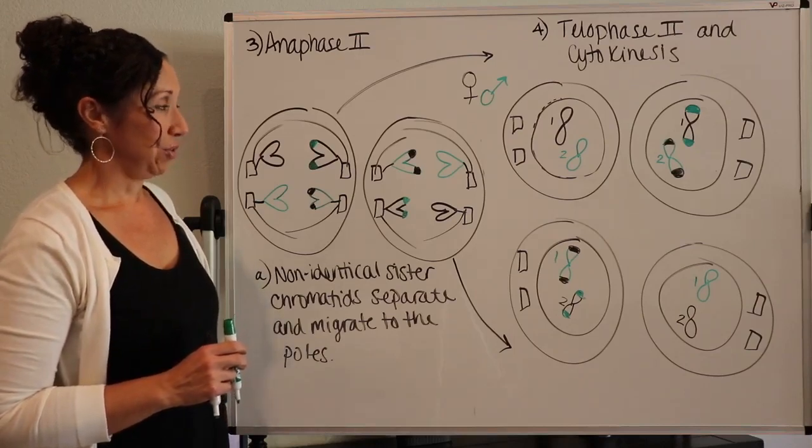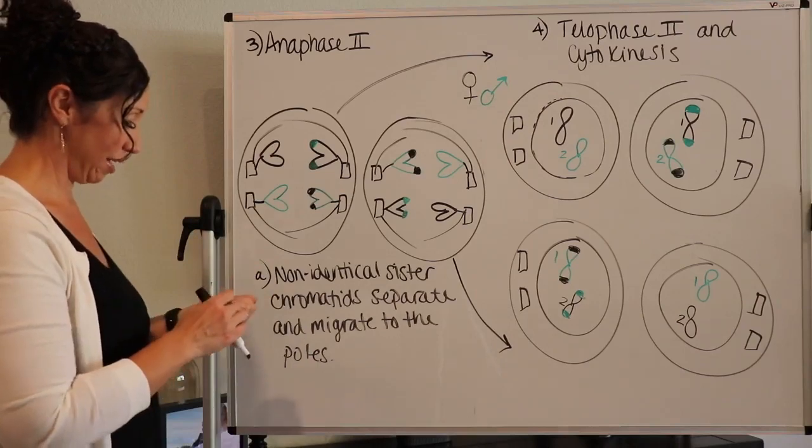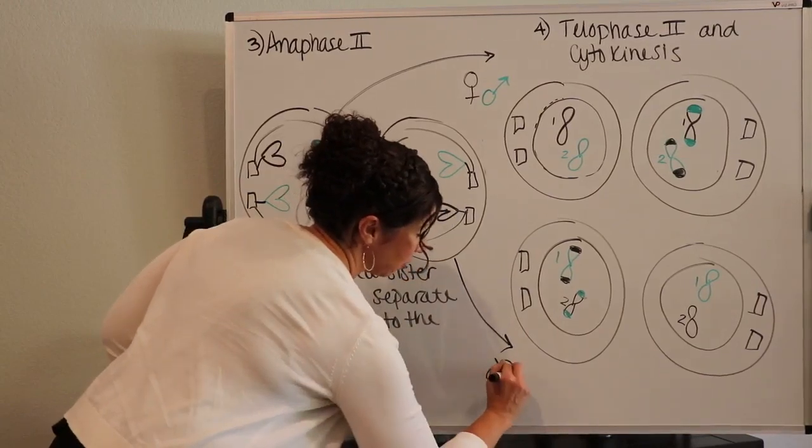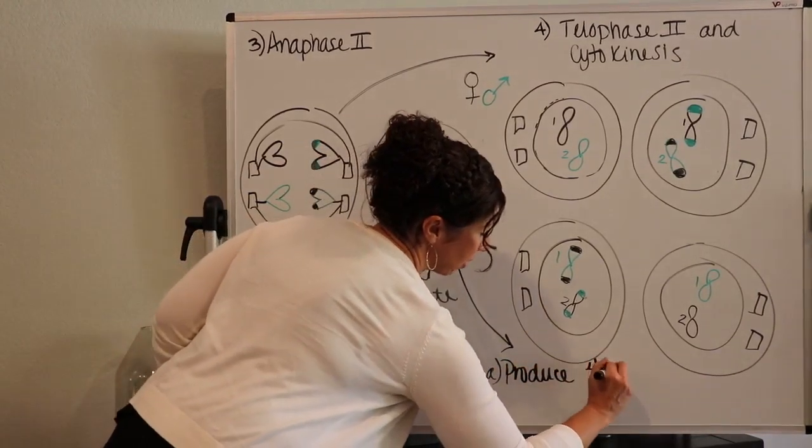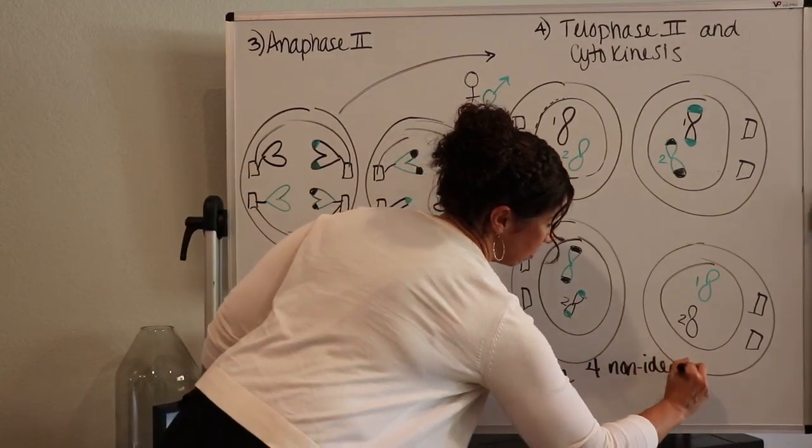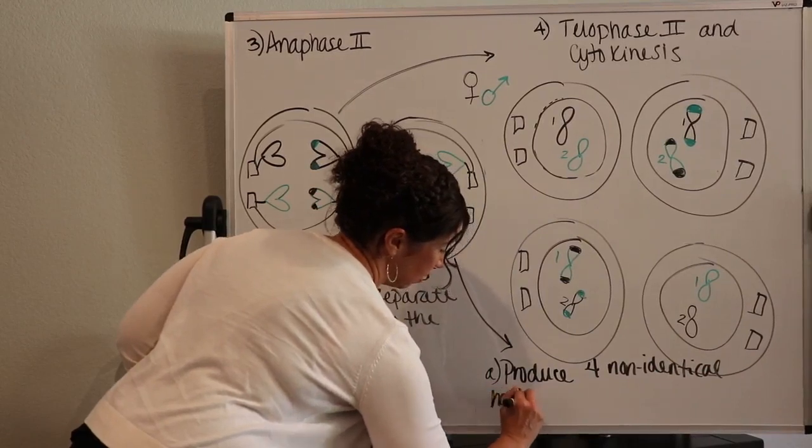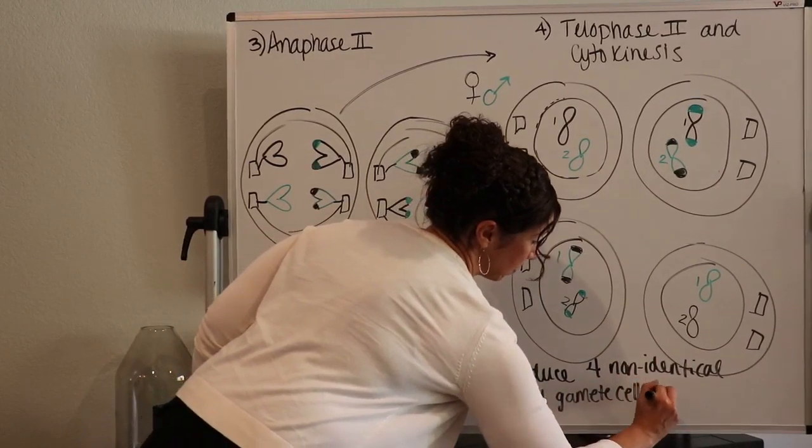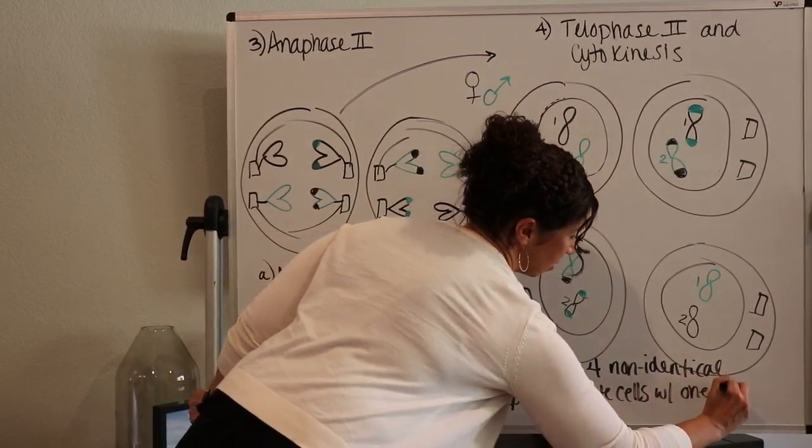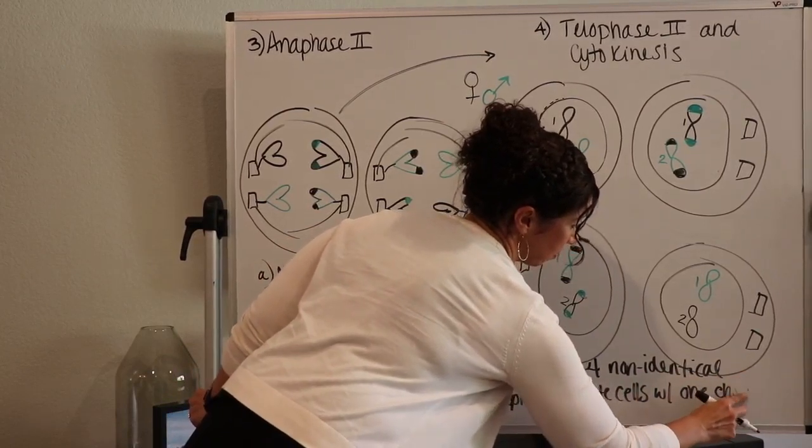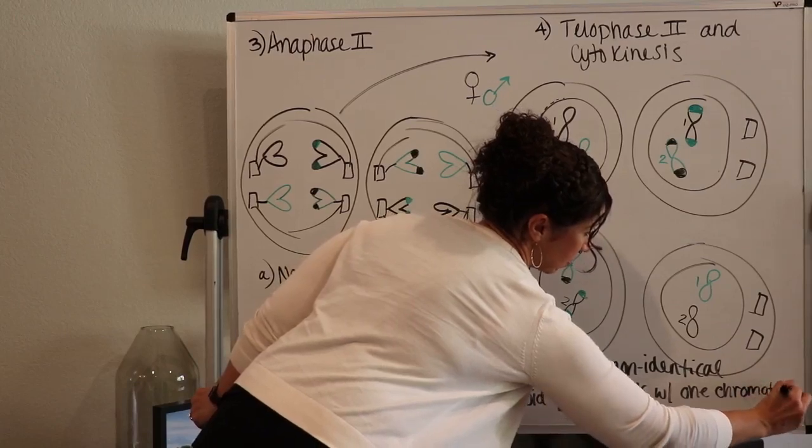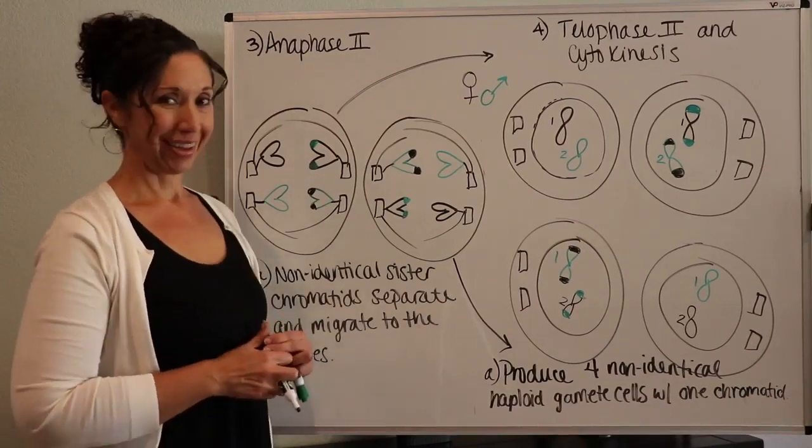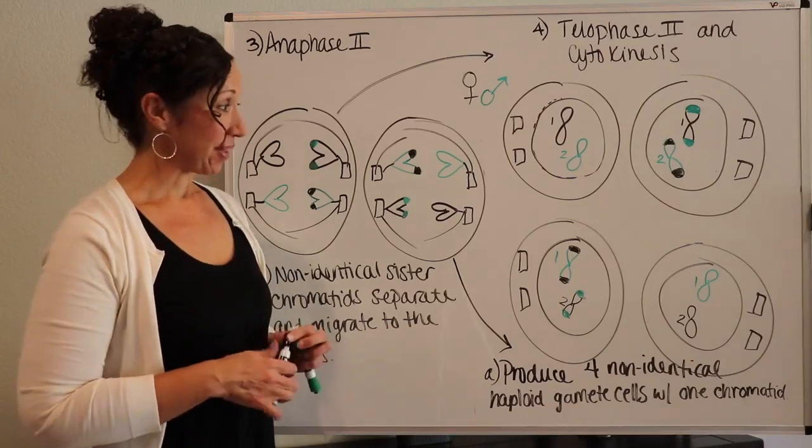So at the end of telophase II and cytokinesis, here's the big, big, big takeaway. You produce, and so this could be a little a under telophase II, you produce four non-identical haploid gamete cells with one chromatid. So each chromosome is made of one chromatid at this point. That is the end of meiosis II.